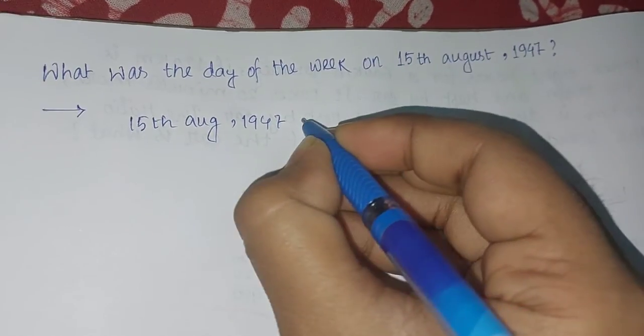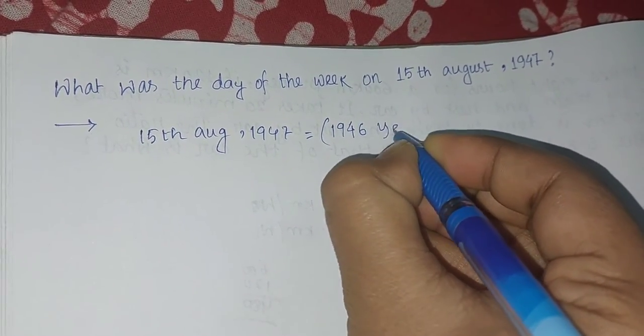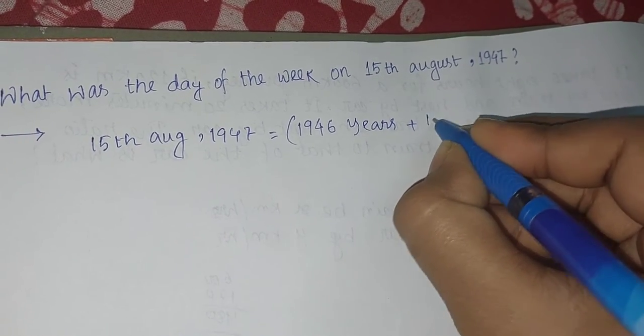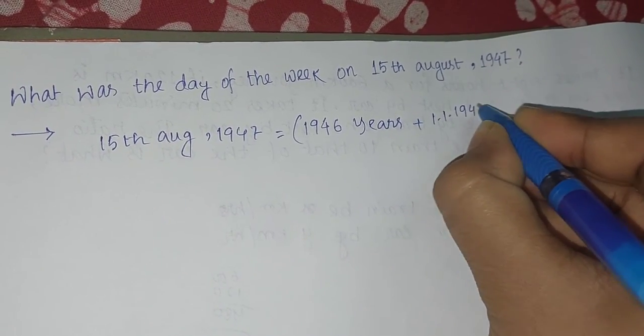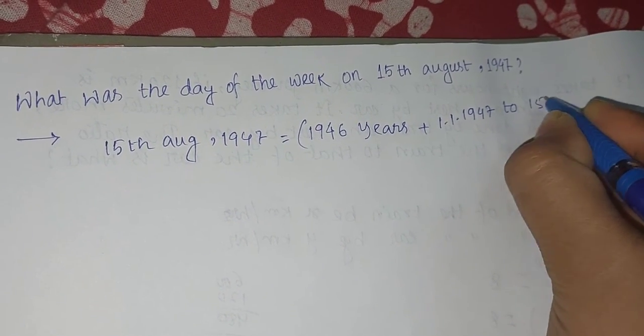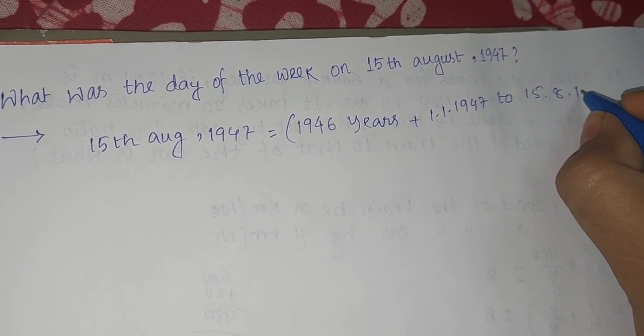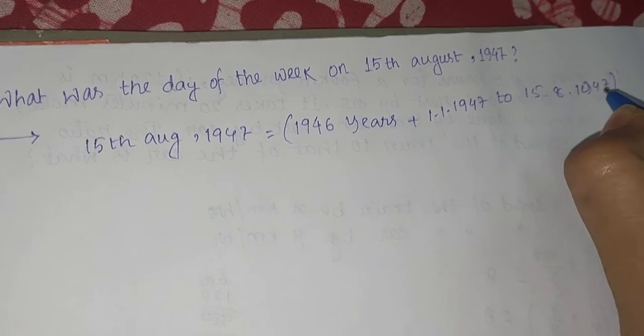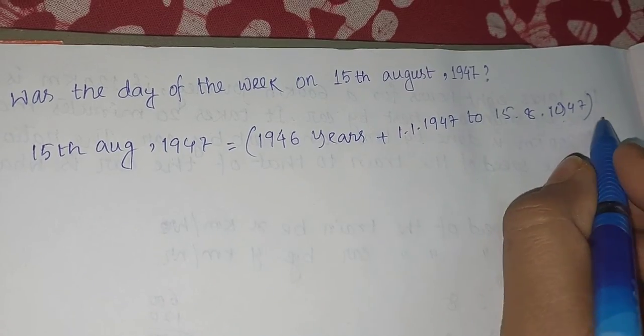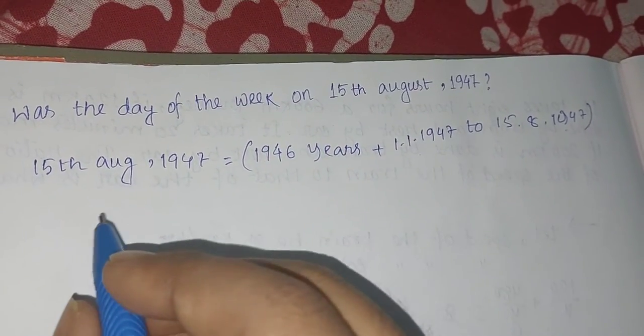It means that is total 1946 years, correct? Plus 1.1.1947 to 15.8.1947. Right, but what does this mean? First January 1947 to 15 August 1947 plus 1946 years.